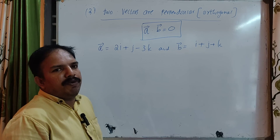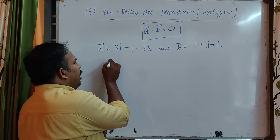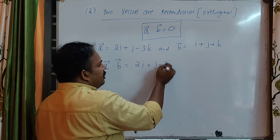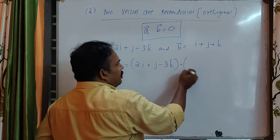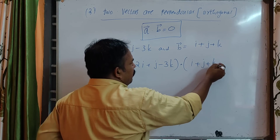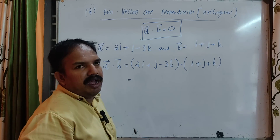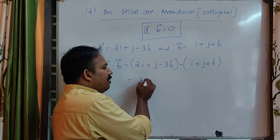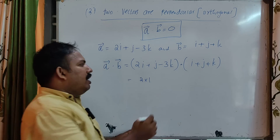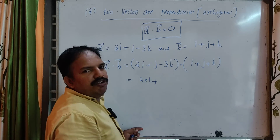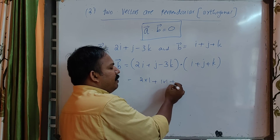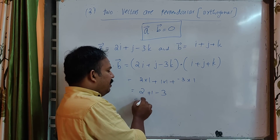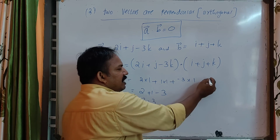We have a dot b. A dot b: 2i plus j minus 3k dot product with b. The calculation gives 2 into 1, plus 1 into 1, minus 3 into 1. The answer is 2 plus 1 minus 3, that is 3 minus 3, which is equal to 0.